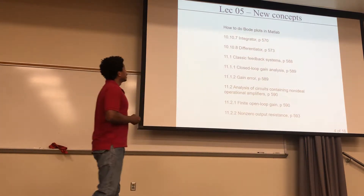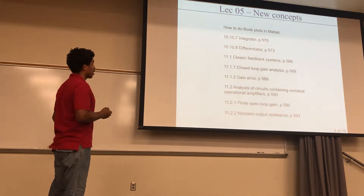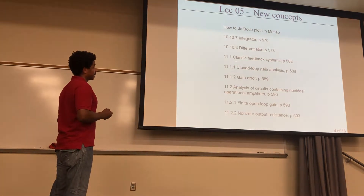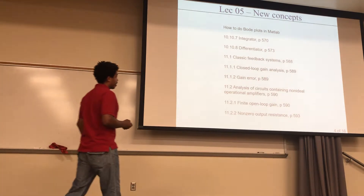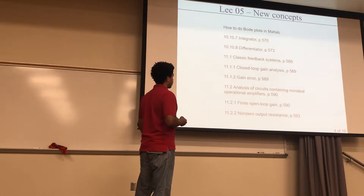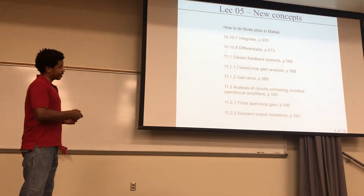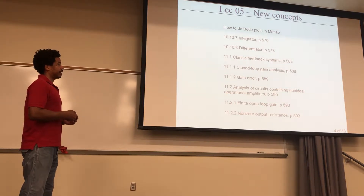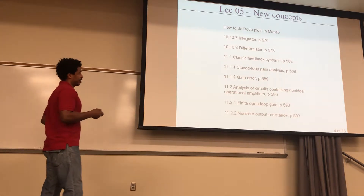Here are the new concepts: first, how to do Bode plots in MATLAB, then the integrator and differentiator, classic feedback systems, closed-loop gain analysis, gain error, and non-ideal amplifiers — including finite loop gain and non-zero output resistance. This is where we stop using the ideal amplifier and start looking at non-idealities, taking out some of the ideal conditions.